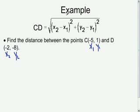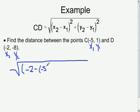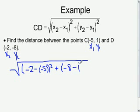Now we just go up to the distance formula and plug in the pieces that we know. We have the square root, and the first quantity is x₂ minus x₁ — x₂ is negative 2, and from that we subtract x₁ which is negative 5. That quantity is squared. To that we add the difference of the y-coordinates: y₂ is negative 8, minus y₁ which is 1, and that quantity is squared.